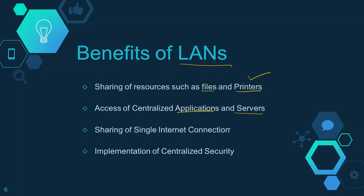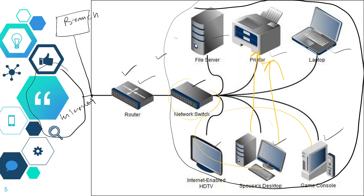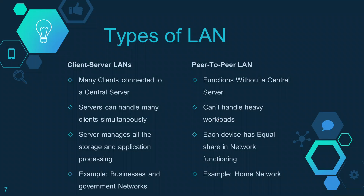Another benefit is that we can use a single internet connection for all the devices inside the LAN. We can also implement centralized security that applies to all devices inside the LAN. For example, if we want to protect all devices from anything coming from the internet, we can install a single firewall — this firewall will protect all the devices, so we don't need a dedicated firewall for each device.